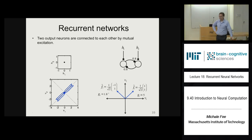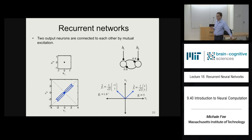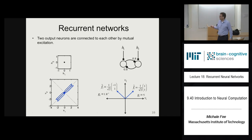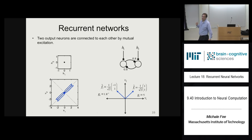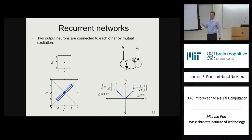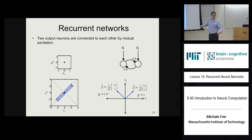All the more complicated fully recurrent networks are nothing but rotated versions of the autapse network response. We basically understood everything we needed to know about recurrent networks just by understanding a simple network with just autapses.